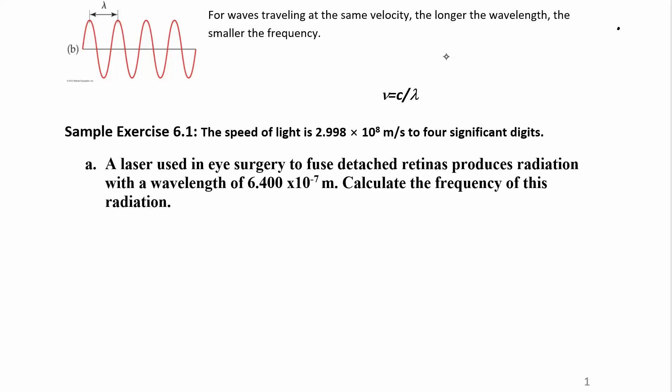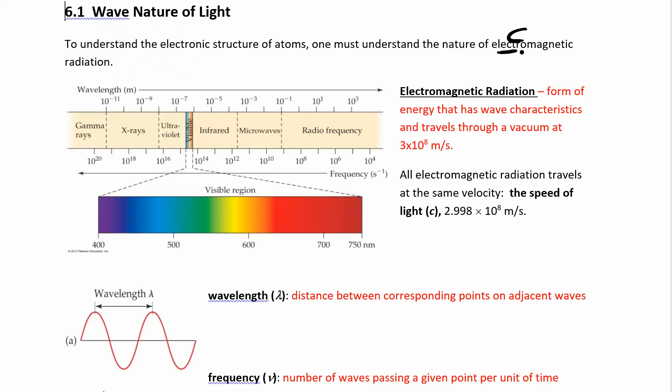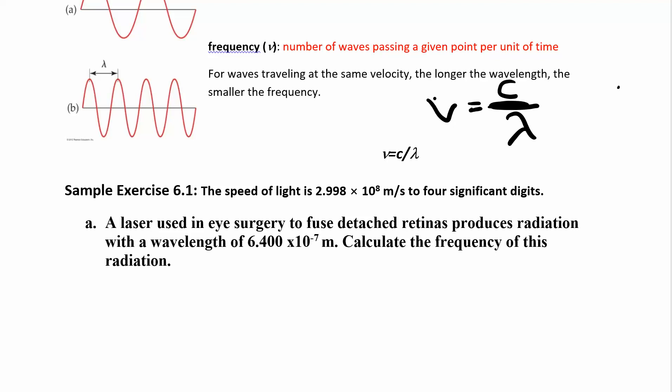All right, so new equals C over lambda. So if you want to rearrange this, new times lambda, if I multiply them both by lambda, it gives me C. Or if I wanted to solve for lambda, I would just divide both sides by new, and I get lambda equals C over new. You have all those equations.